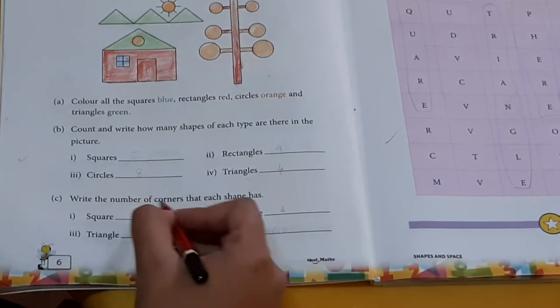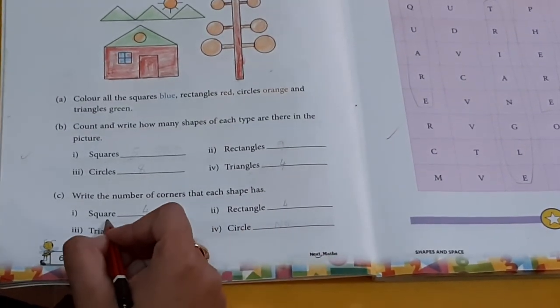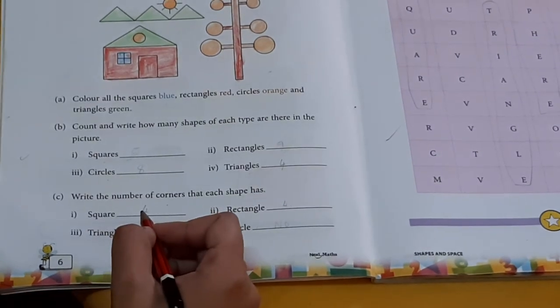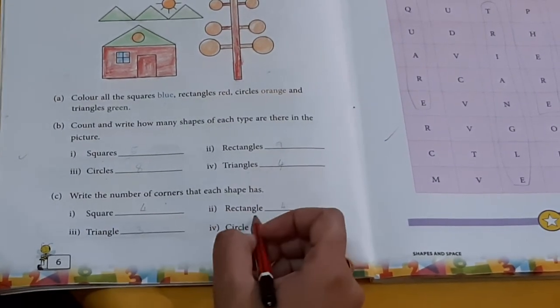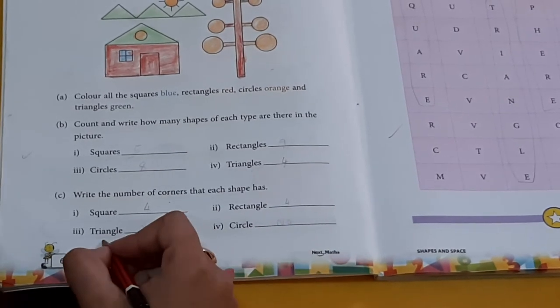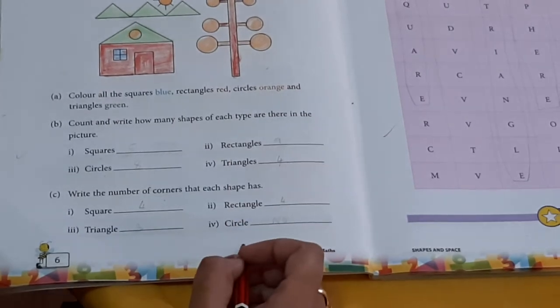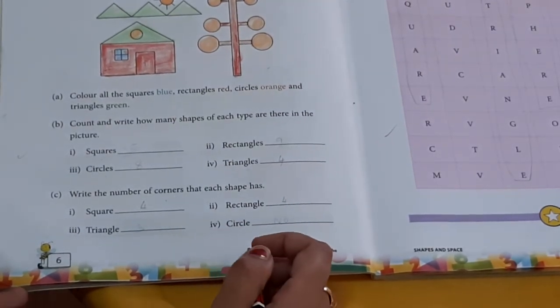Write number of corners that each shape has. Square. Four sides. Rectangle. Four sides. Triangle. Three sides. Circle. No sides.